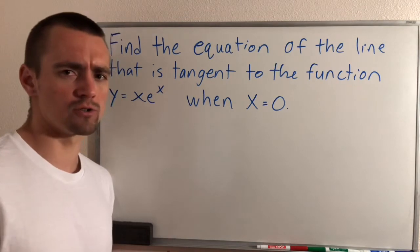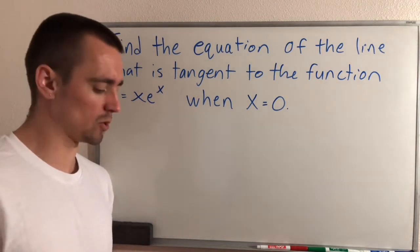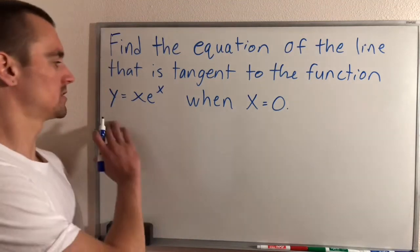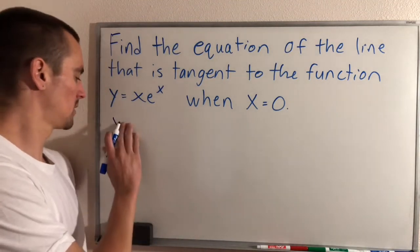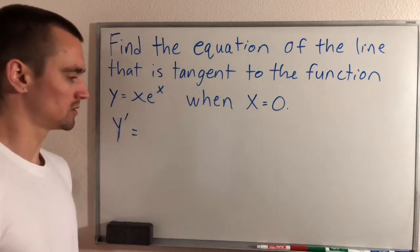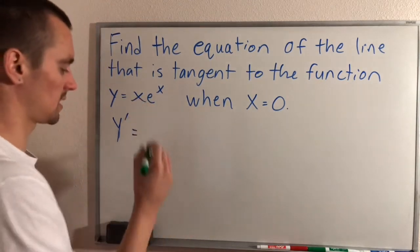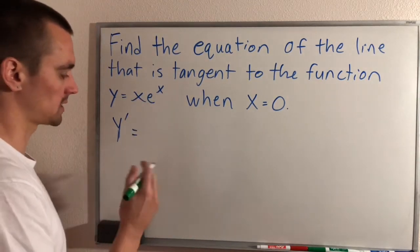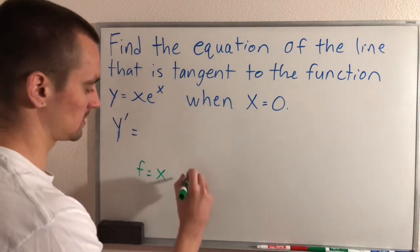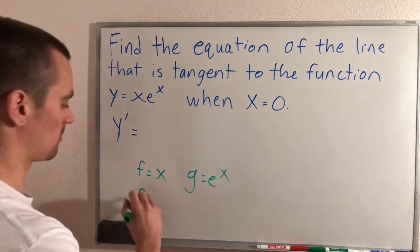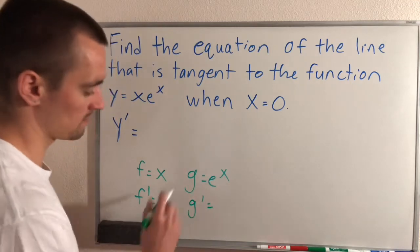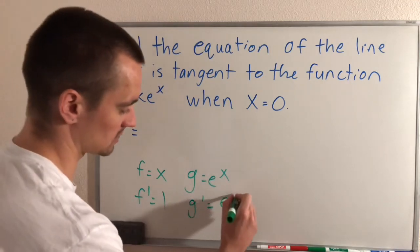Whenever you're trying to figure out the slope of a function at a certain point, you're going to want to start with that function's derivative. So the first thing we want to do is take the derivative of this function. To find y prime we're going to have to use the product rule. We'll say that f is going to be x and g is going to be e to the x. Then f prime, the derivative of x, is just 1, and g prime, the derivative of e to the x, is just e to the x.